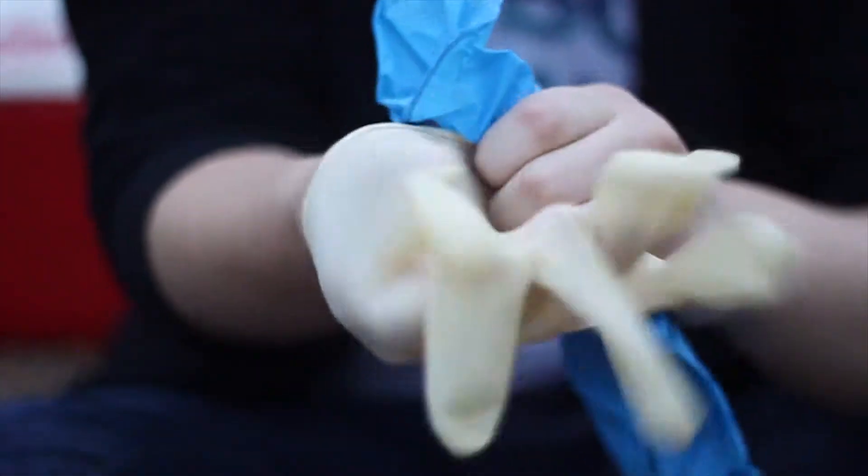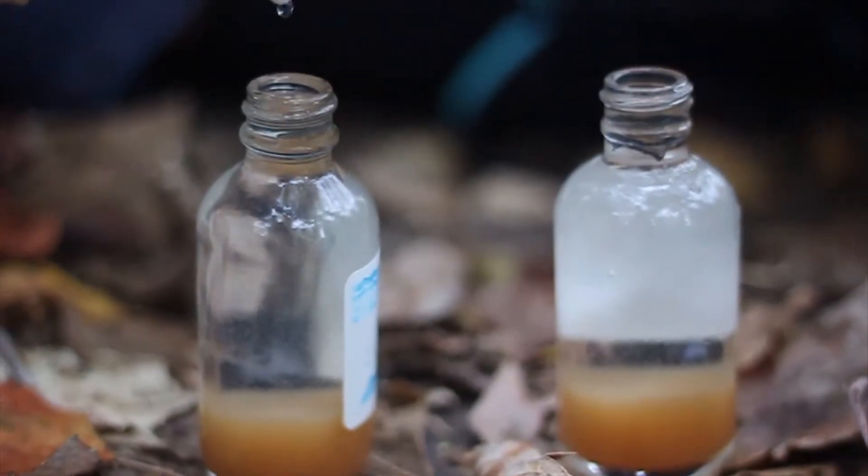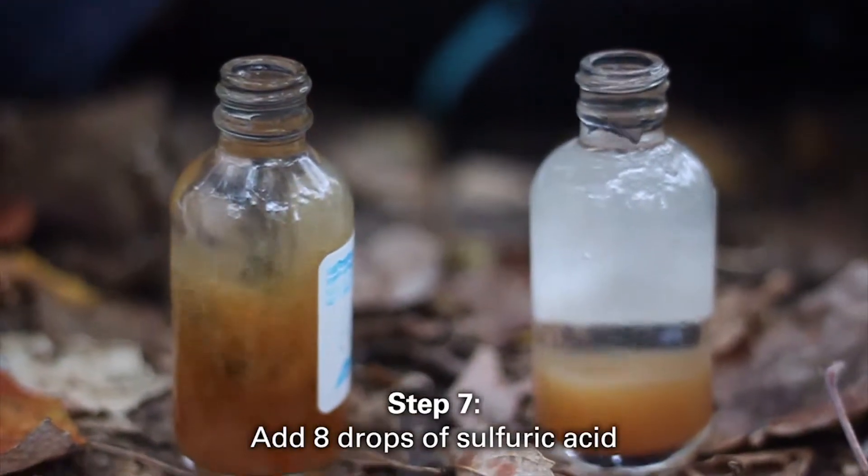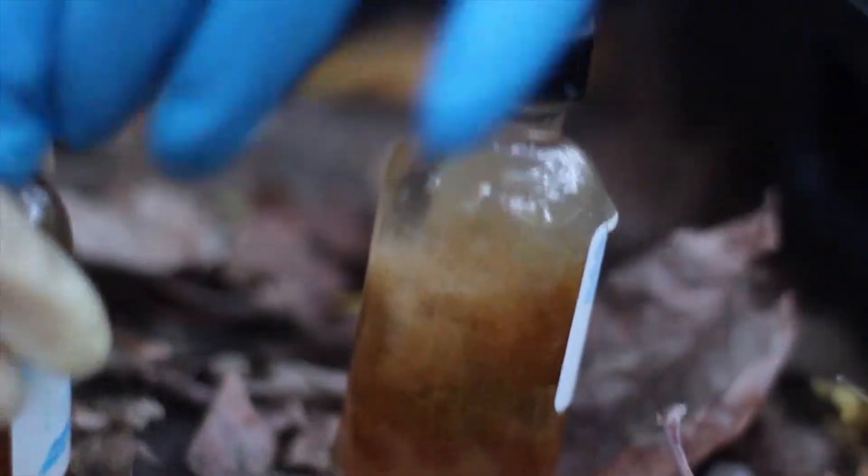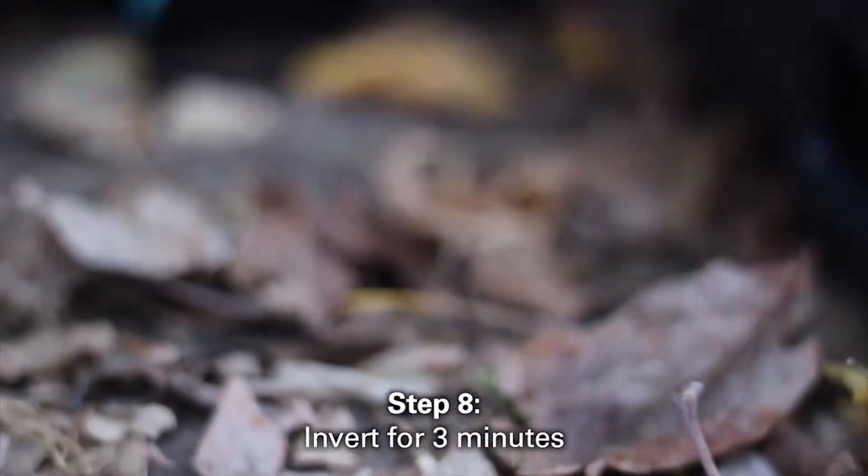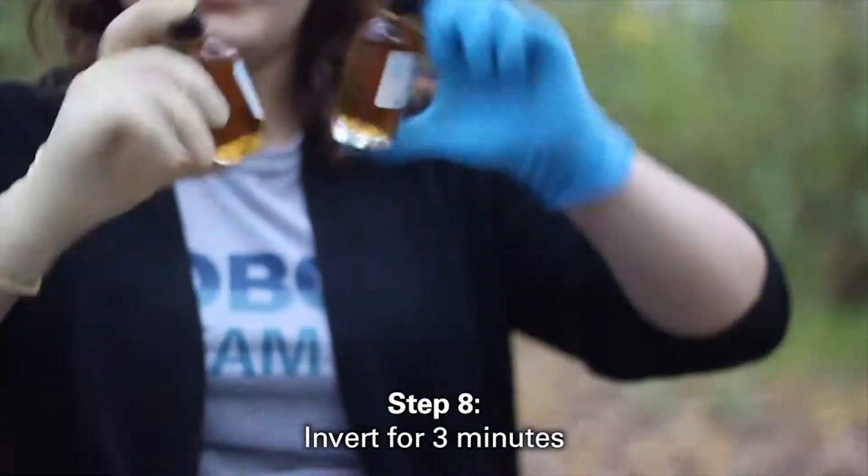At this point, we will be handling mildly corrosive chemicals. So if you would like to put on gloves, they should be available to you in your kit. Once the solution has completely settled 2 times, we will add 8 drops of sulfuric acid. Cap your sample bottles once again and invert for 3 minutes. The process will be done once you no longer see specks floating in the sample.